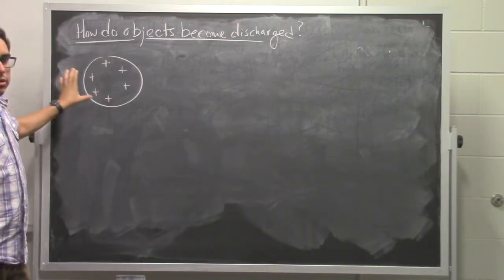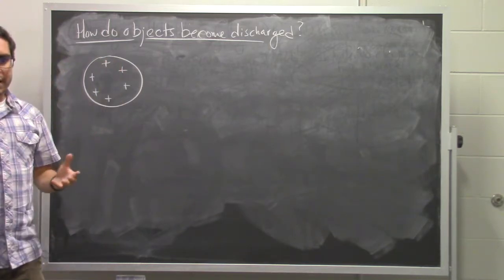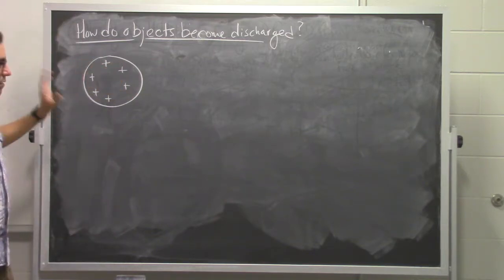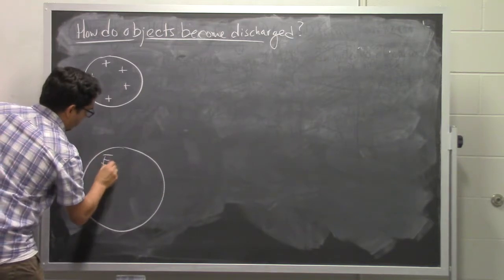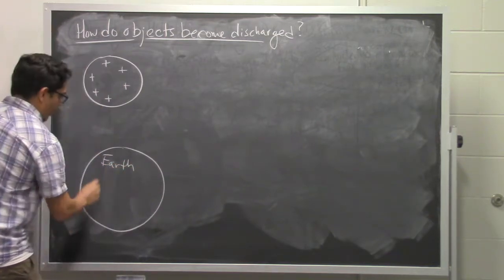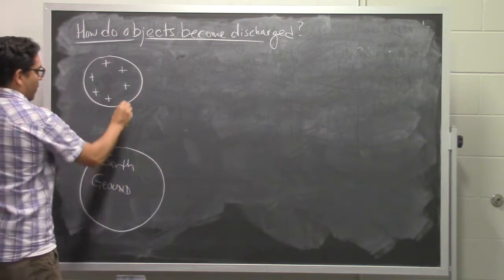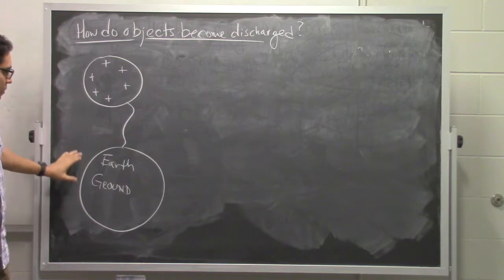And the way to discharge this object is to connect it to something that has a lot of electrons, a lot more electrons than this object itself. And typically what we do is we would actually physically attach this thing through some sort of metal wire to the earth or what we'll actually start to call the ground. So we'll attach a metal wire from this object to the earth or ground.